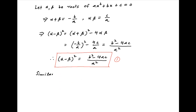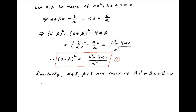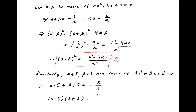Similarly, alpha plus delta and beta plus delta are the roots of the quadratic equation Ax² + Bx + C = 0. Therefore, the sum of the roots (alpha plus delta) plus (beta plus delta) is equal to minus B upon A, and the product of the roots (alpha plus delta) times (beta plus delta) is equal to C upon A.